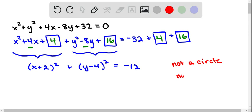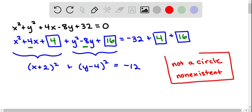And in fact this is non-existent. If that number was 0 then we would just have a point. If that number was positive we would have a circle, but if that number is negative, then it's non-existent.